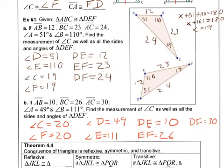You should have done some simple algebra to find angle C and therefore angle F, then lined up the information with the other pieces. The answers are: angle D is 49, angle E is 111, DE is 10, EF is 26, and DF is 30.